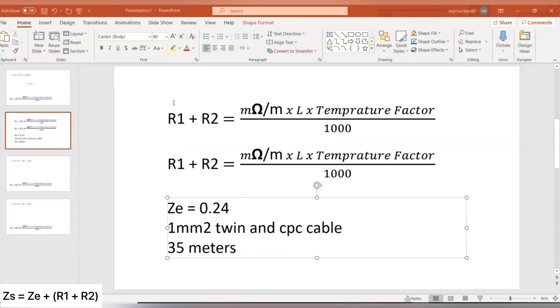Just again, same calculation, except just using different parameters this time. So as you can see, we've got a ZE of 0.24 ohms, we're using a 1mm squared twin and CPC cable, and the length is 35 metres.